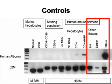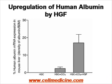Looking at the data in a different format: hematopoietic stem cells from bone marrow do not secrete human albumin on their own. If you administer them into mice and injure the liver, you see some human albumin expression. If you injure the mouse and also give human hepatocyte growth factor, you see an upregulation in human albumin expression.